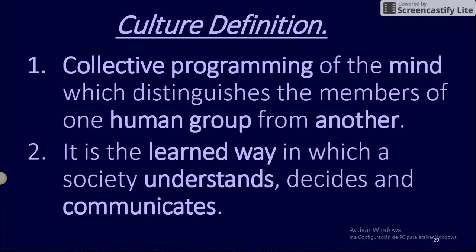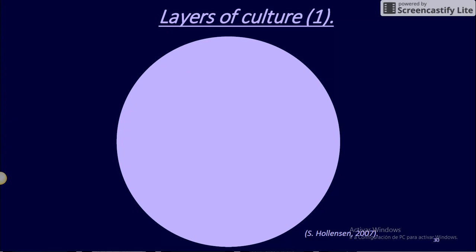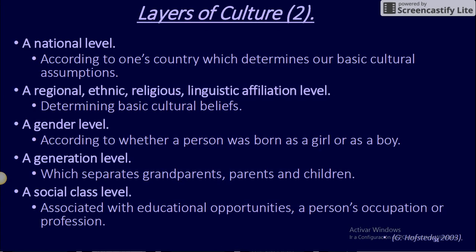Culture definition: 1. Collective programming of the mind which distinguishes the members of one human group from another. 2. It is the learned way in which a society understands, decides, and communicates. Layers of culture: 1. National culture. 2. Business culture. 3. Company culture. 4. Individual behavior and decision-maker. (Holmson, 2007)